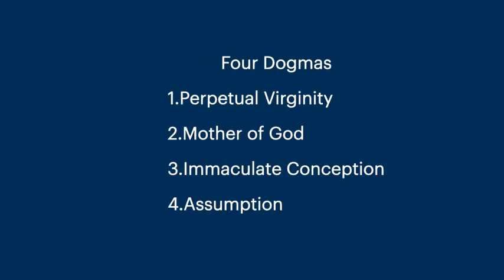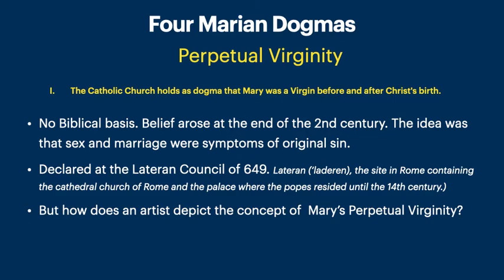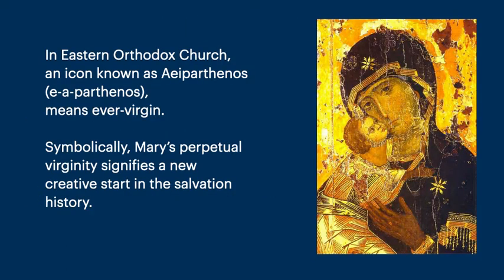The four dogmas are: Perpetual Virginity, Mother of God, Immaculate Conception, and The Assumption. In the first dogma, the Catholic Church holds that Mary was a virgin before and after Christ's birth. There is no biblical basis for this belief, but it was thought that sex and marriage were symptoms of original sin. But how does an artist depict the concept of perpetual virginity?